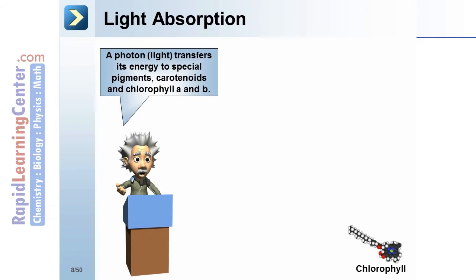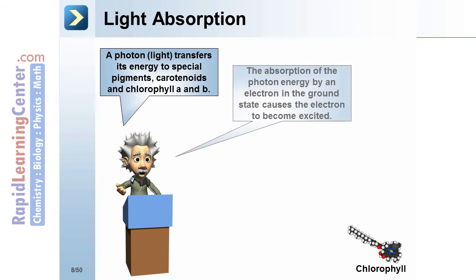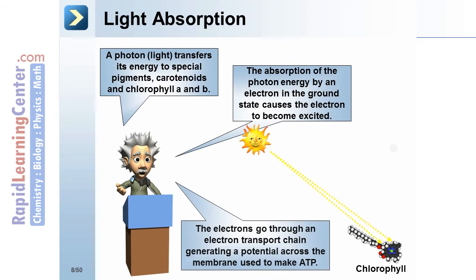Light absorption. A photon, light, transfers its energy to special pigments: carotenoids, and chlorophyll A and B. The absorption of the photon energy by an electron in the ground state causes the electron to become excited. The electrons go through an electron transport chain generating a potential across the membrane used to make ATP.